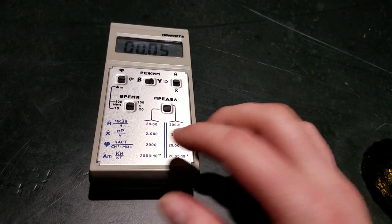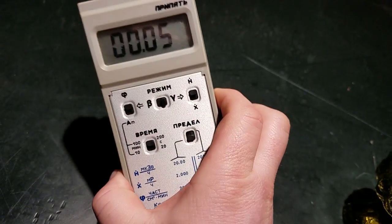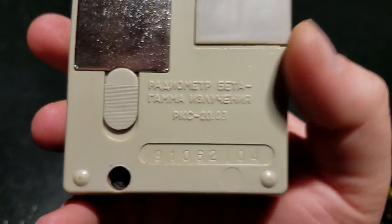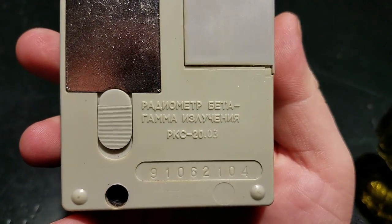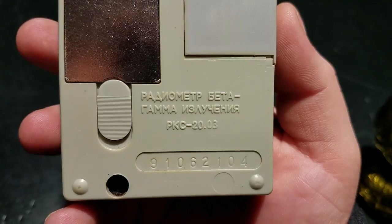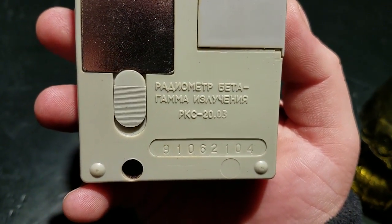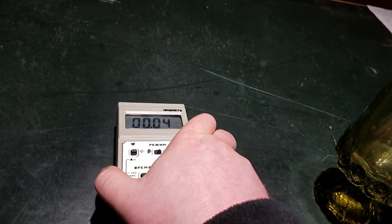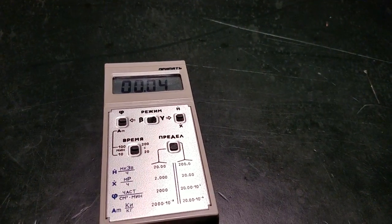Since I don't have a gamma response curve or a beta response curve at energy level for this guy, it's kind of hard to determine what that is. I don't know if I mentioned this, but this is a Pripyat RKS-20.03 and it says it's a radiometer beta-gamma излучения, which is beta and gamma radiation monitoring or measuring unit.